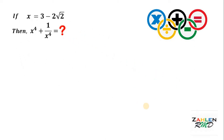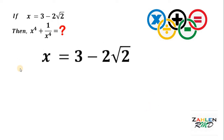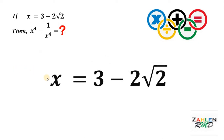Now, let's see if you got the correct answer. Let's answer this question together. Let's take the given equation. We have x equals 3 minus 2 square root of 2. Now, looking at our goal, we want to find the value of x to the fourth plus 1 over x to the fourth.